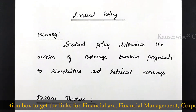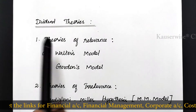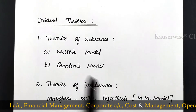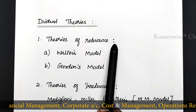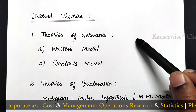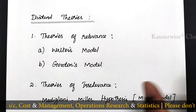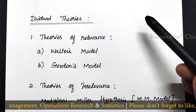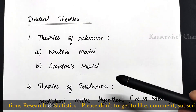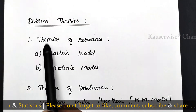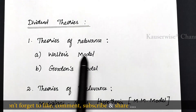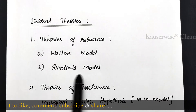Under dividend policy, we have two different theories. The first one is theories of relevance and the second one is theories of irrelevance. Theories of relevance means dividend policy of a firm has a direct effect on the value of shares in the market, because higher dividend will increase the value of shares whereas lower dividend decreases its value. This is the concept of theories of relevance and it has two different models: Walter's model and Gordon's model.